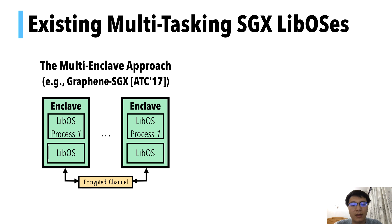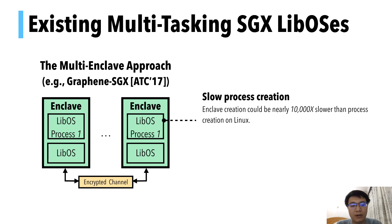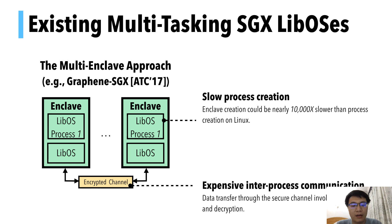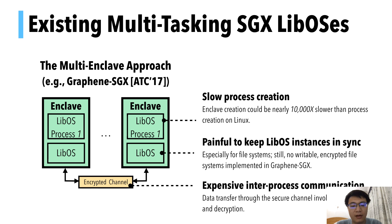The second is the multi-enclave approach, where each LibOS process resides in a dedicated enclave and is served by a dedicated LibOS instance. LibOS instances in different enclaves communicate through a secure communication channel. The problems with this approach are: first, LibOS process creation is very slow, as creating a LibOS process involves creating a new enclave; second, IPC between LibOS processes is expensive as data transfer involves encryption and decryption; third, it is painful for the LibOS to synchronize all LibOS instances in different enclaves — for example, implementing a local file system becomes a distributed problem.